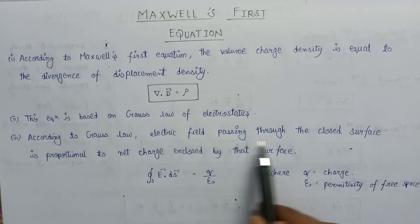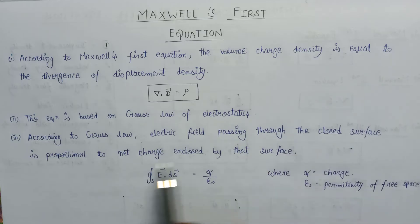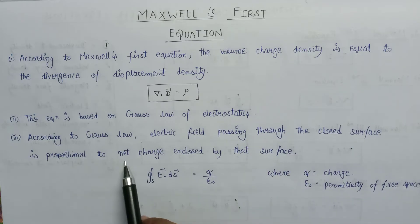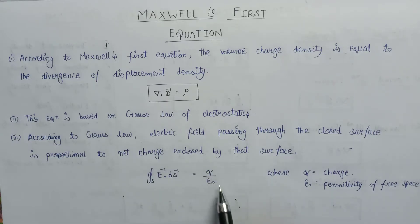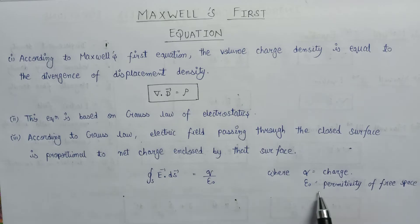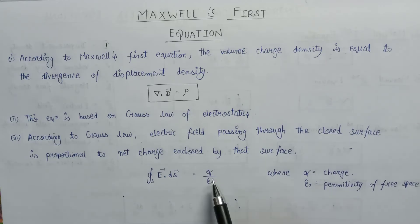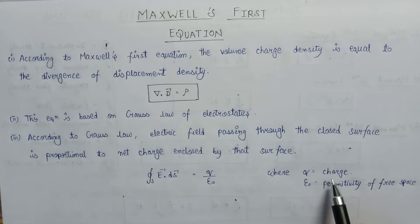So the electric field passing through the closed surface, that is E dot dS, equals the net charge enclosed by that surface. Here Q is the net charge, and 1 over epsilon naught is the proportionality constant, where epsilon naught is permittivity of free space and Q is the charge enclosed by the closed surface.